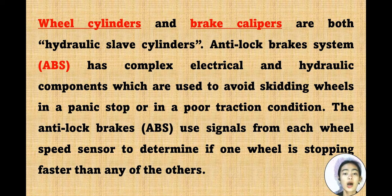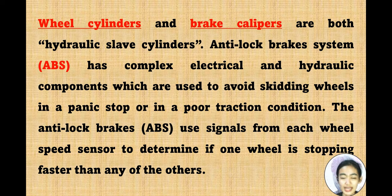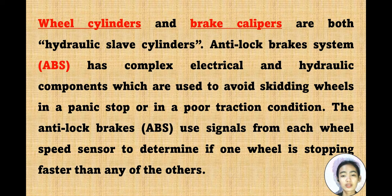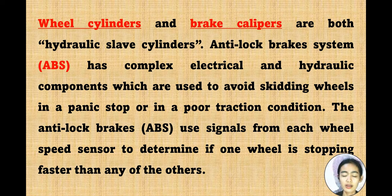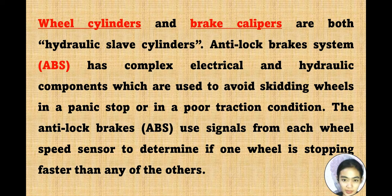The anti-lock brake system (ABS) has complex electrical and hydraulic components used to avoid skidding wheels during a panic stop or in poor traction conditions. The anti-lock brakes use signals from each wheel speed sensor to determine if one wheel is stopping faster than the others. ABS is very important because when you press the brake, it doesn't result in a sudden, uncontrolled stop — it provides a smooth, controlled stop.